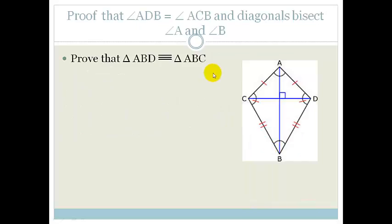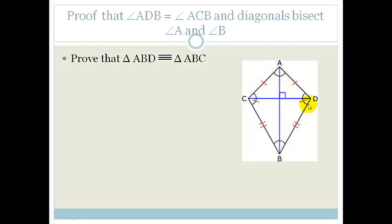Let's look at some proofs. In this proof, we're going to prove that angle ADB equals angle ACB. We're also going to prove that the diagonals bisect each other — that this angle equals that angle and that angle equals that angle. We're going to do it in one fell swoop by proving that triangle ABD is congruent to triangle ABC.